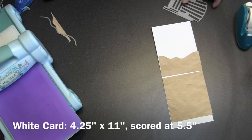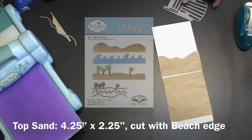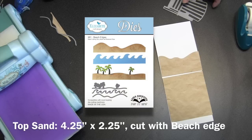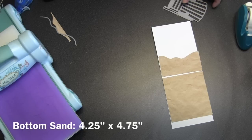I've started with a white A2 long card, so that's four and a quarter by eleven inches scored in the middle at five and a half inches. I found some patterned paper in a sand color. I cut the top piece to about two and a quarter high and cut the top edge with that beach edges die. And the bottom sand piece is just a rectangle four and a quarter by four and three quarters.